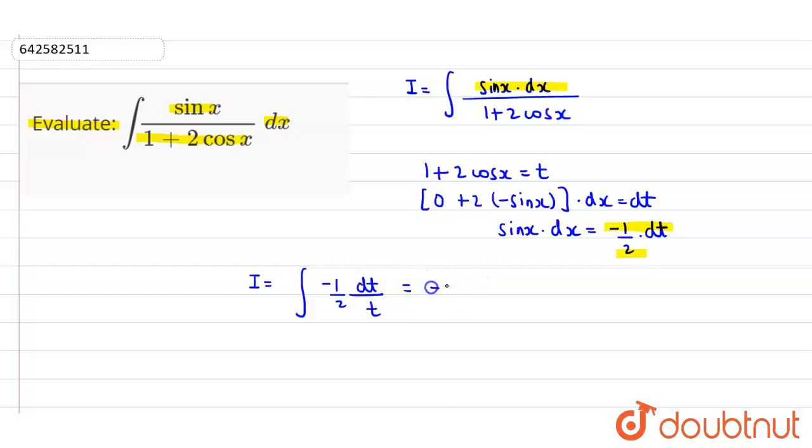Now minus 1 by 2 is constant, we can take it outside and we will get integration of dt by t. So what is the integration of dt by t? It is log mod t plus c, where c is the integration constant.